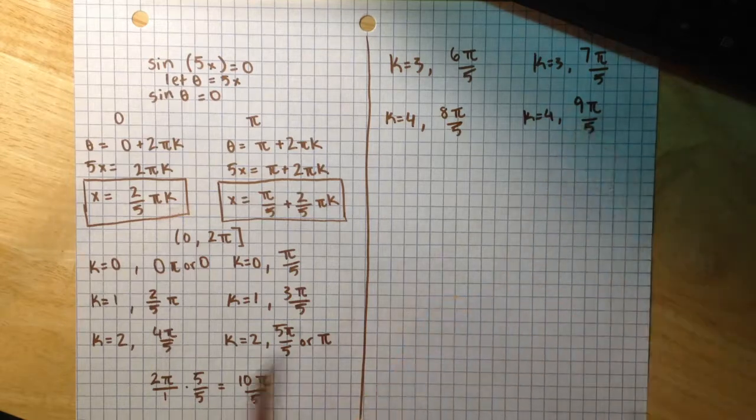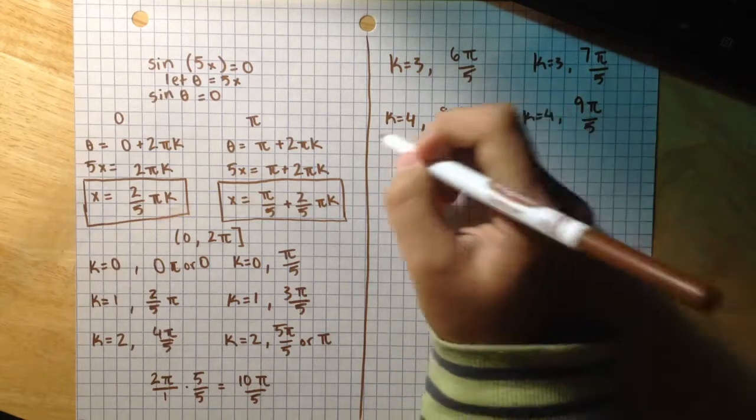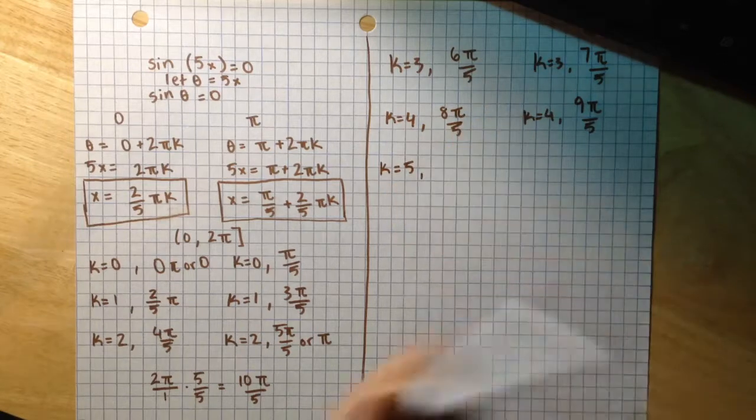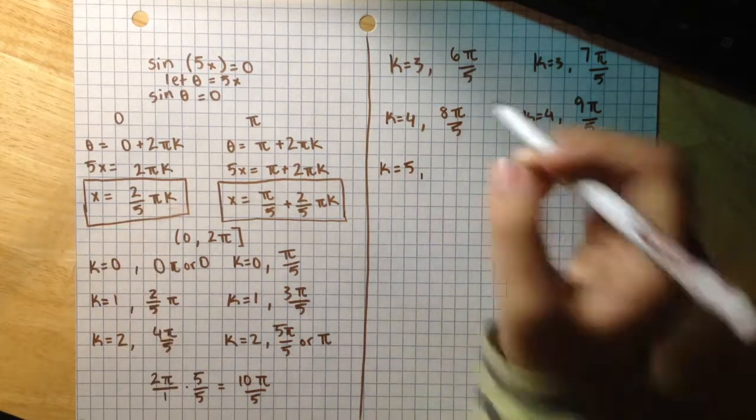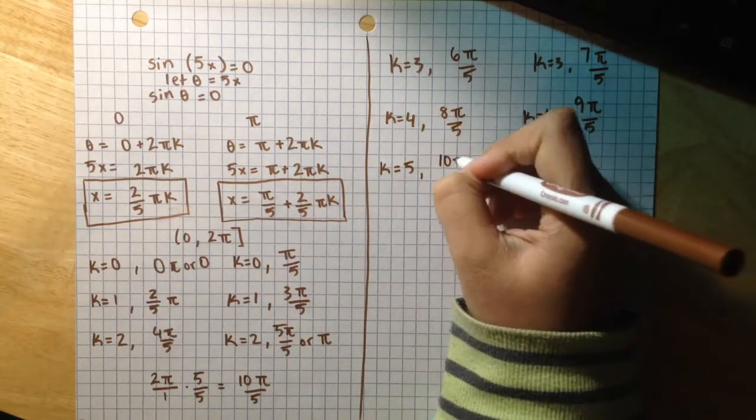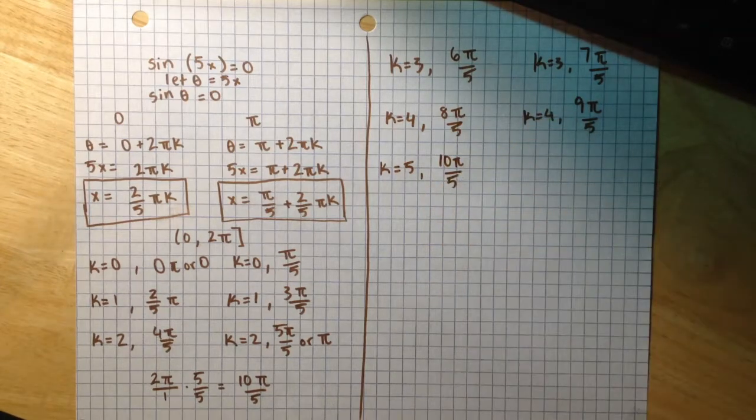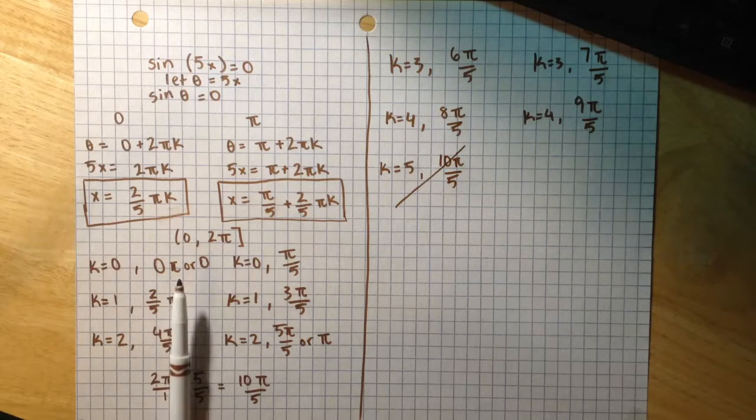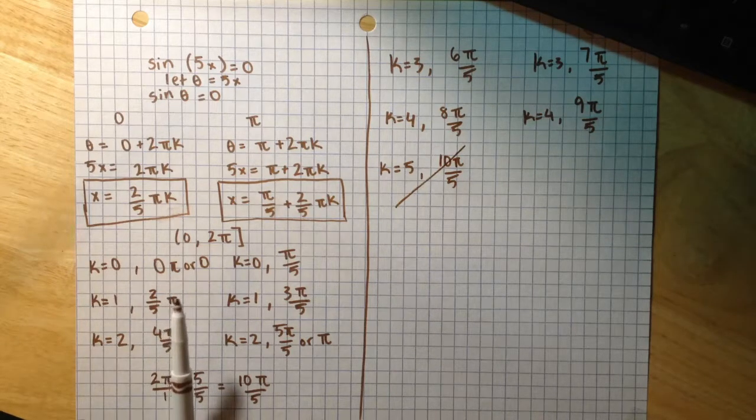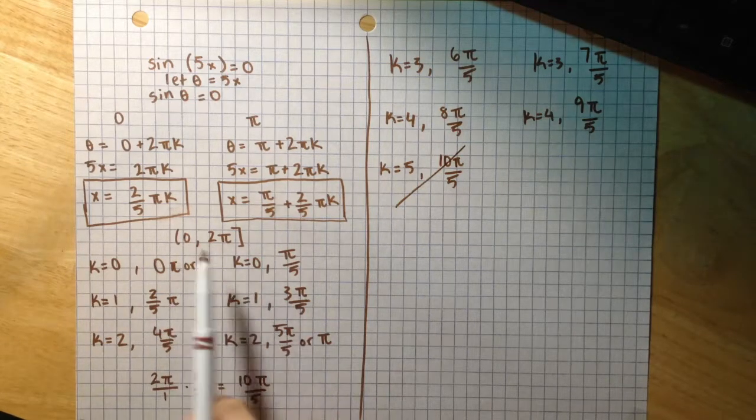So you can see I'm getting really close to 10π/5. Let's just do one more to see. If I plug 5 into this equation, I get 10π/5. So I know I can't go any farther than this. So the answer to when they asked us to list those solutions, which are in the interval 0 to 2π,